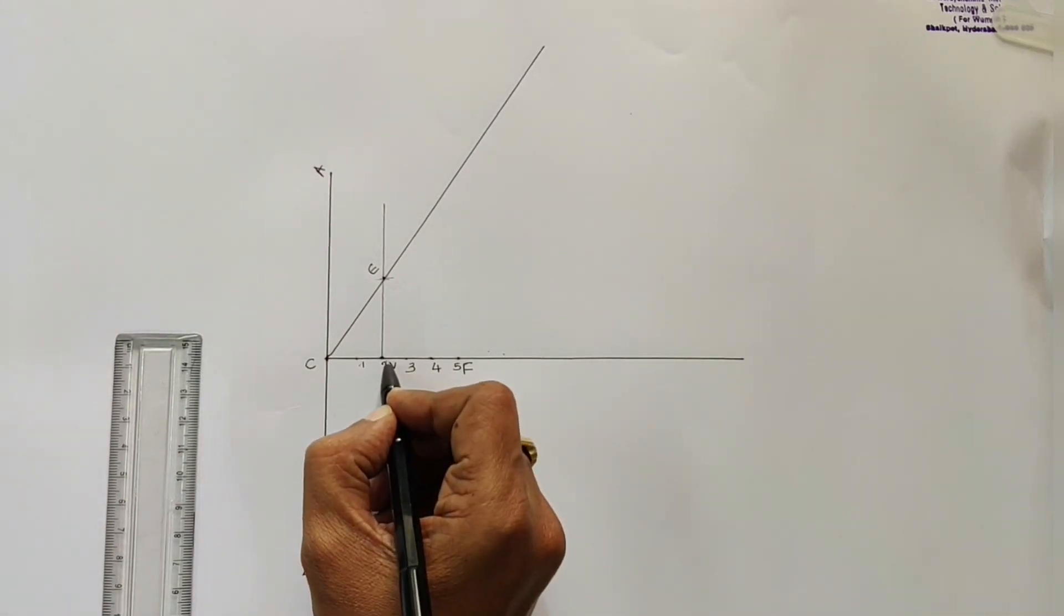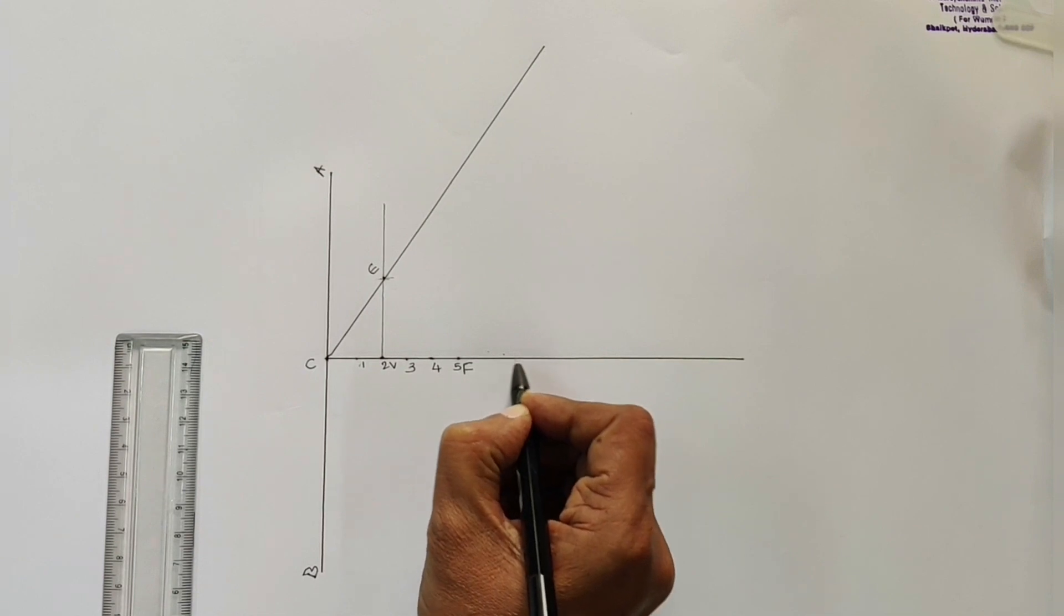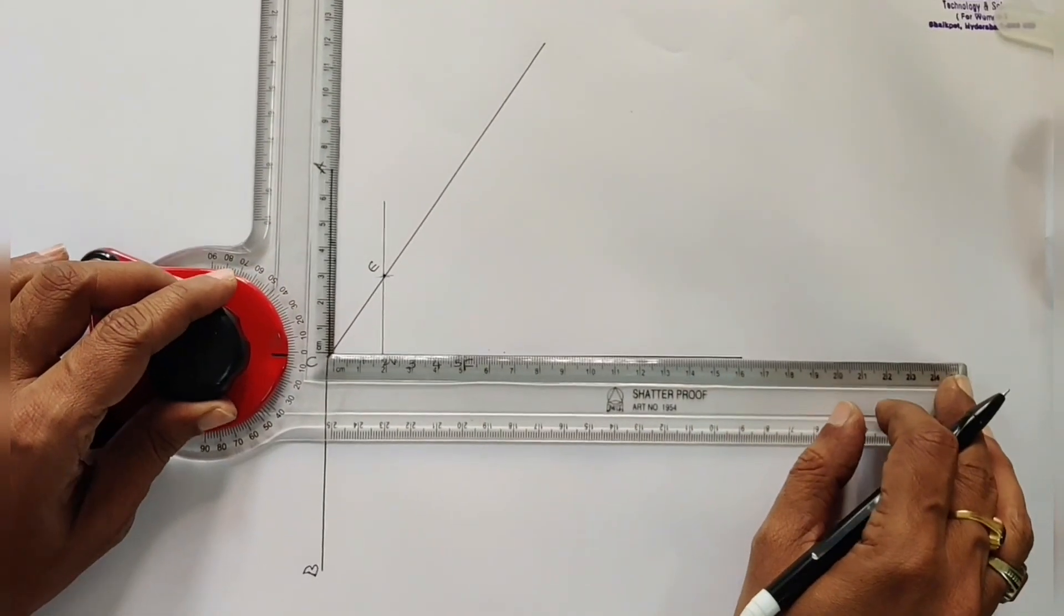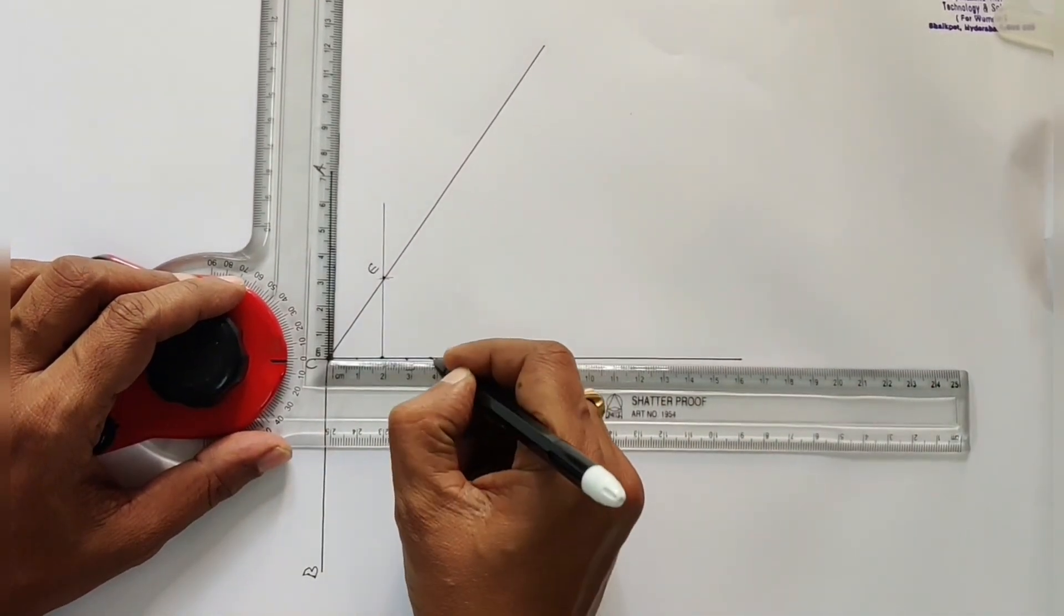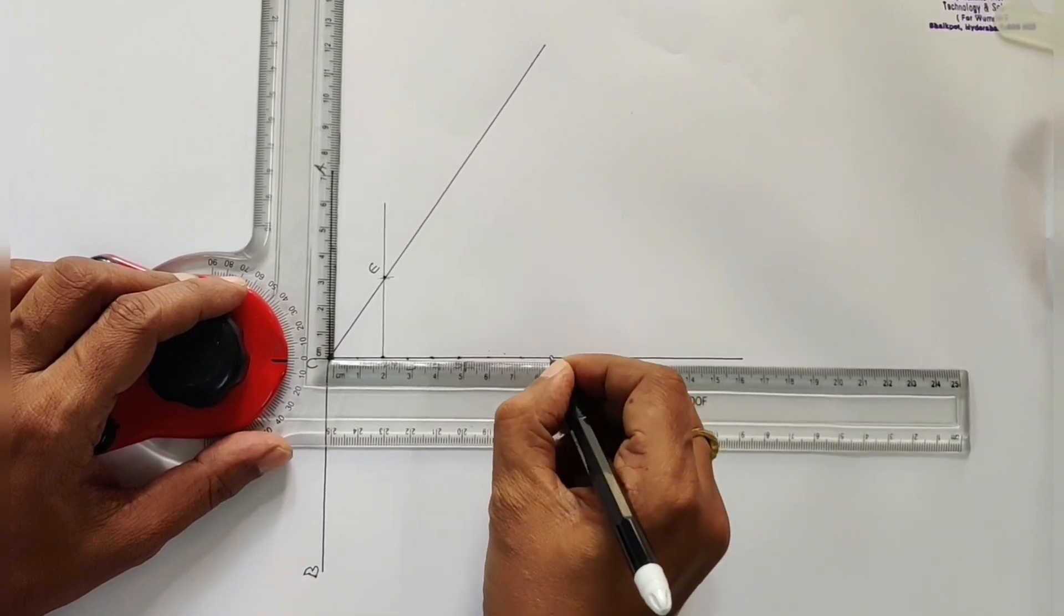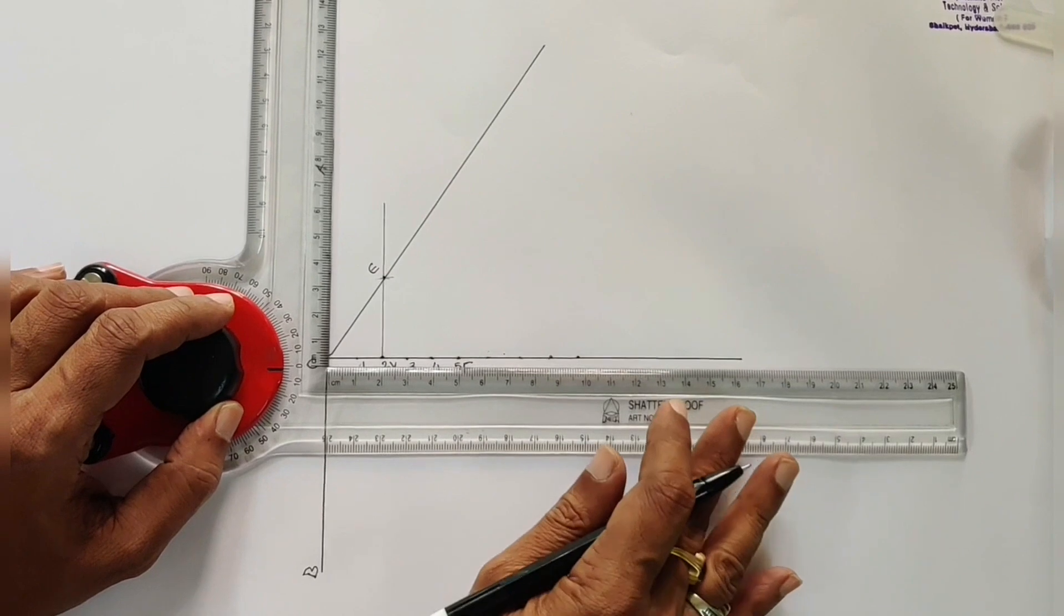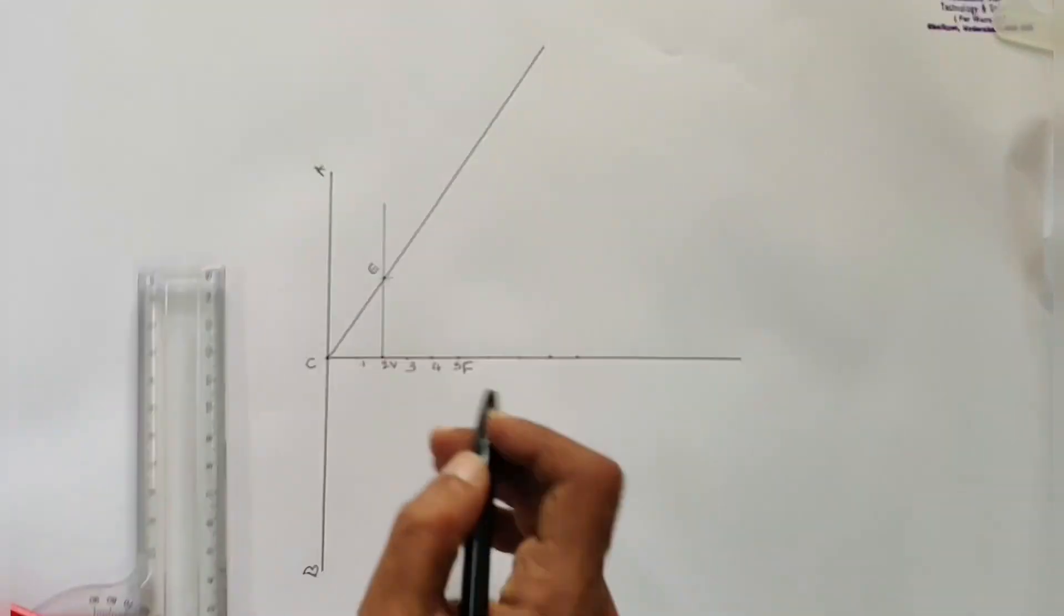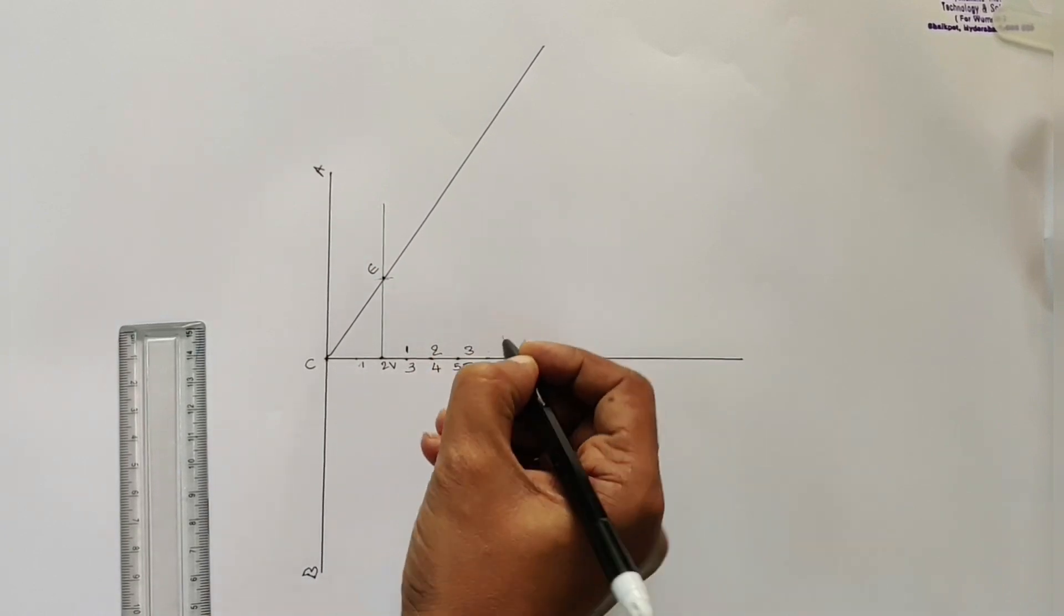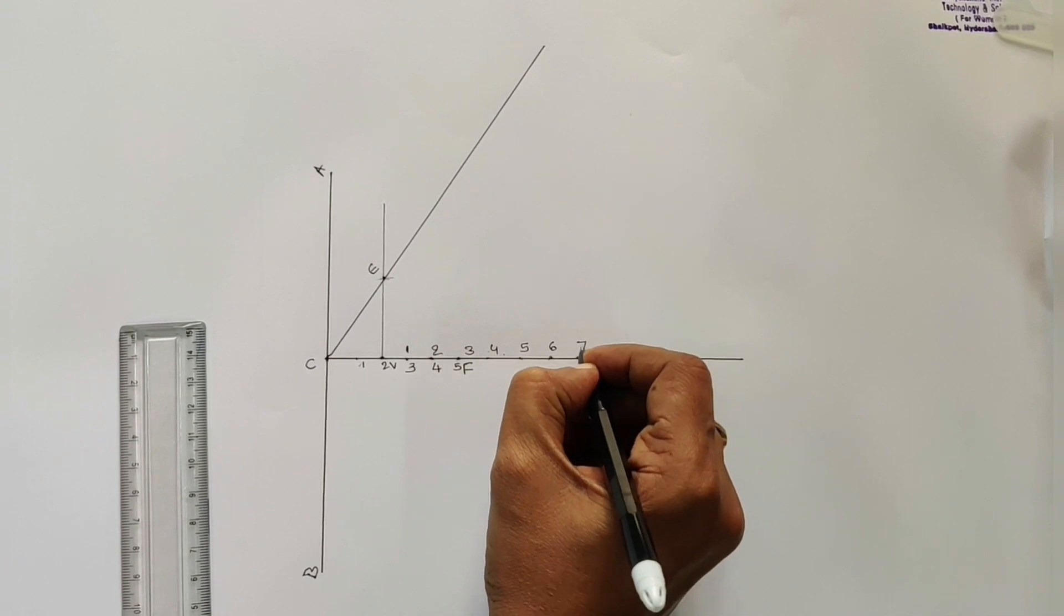From V onwards, with a gap of 10 mm, locate 5 points on the axis. At most, you can take any number, say 7, 9 like that. Then give numbers on those points: 1, 2, 3, 4, 5, 6, 7.